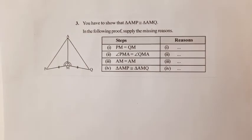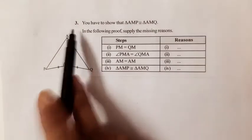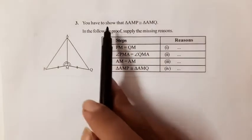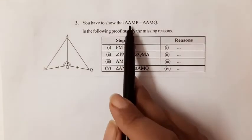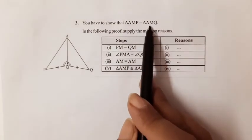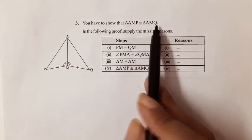Next, we solve question number 3 of exercise 7.2. You have to show that triangle AMP is congruent to triangle AMQ.